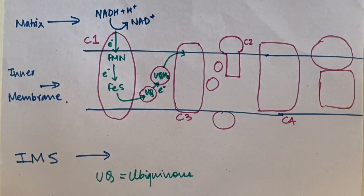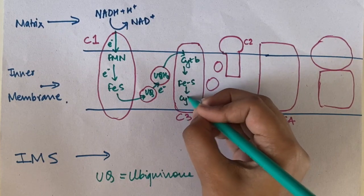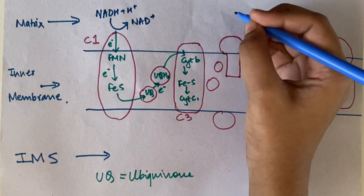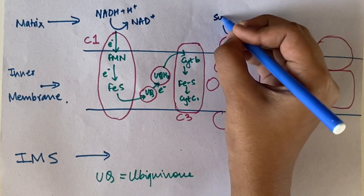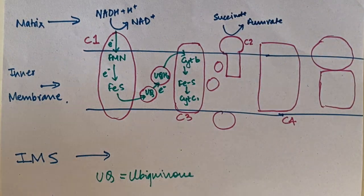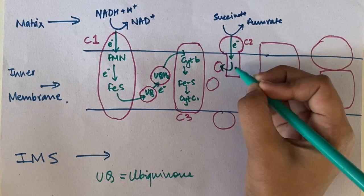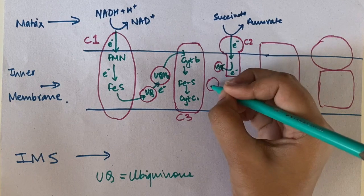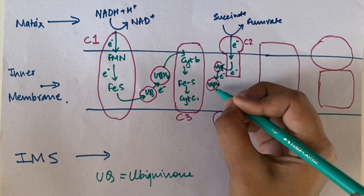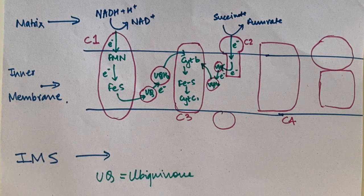The electrons now travel from UQH2 to Complex 3 — through cytochrome b, then the iron-sulfur complex, followed by cytochrome c1. Meanwhile, the same donation process occurs via Complex 2: since succinate dehydrogenase is present in the matrix, it converts succinate to fumarate producing FADH2, and by dehydrogenation of FADH2, electrons are donated to ubiquinone, again reducing it to UQH2, which also transfers electrons into Complex 3.